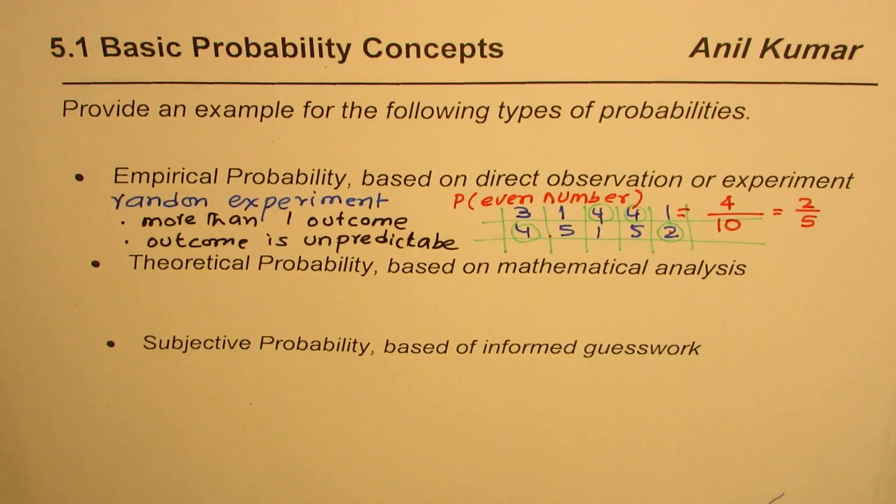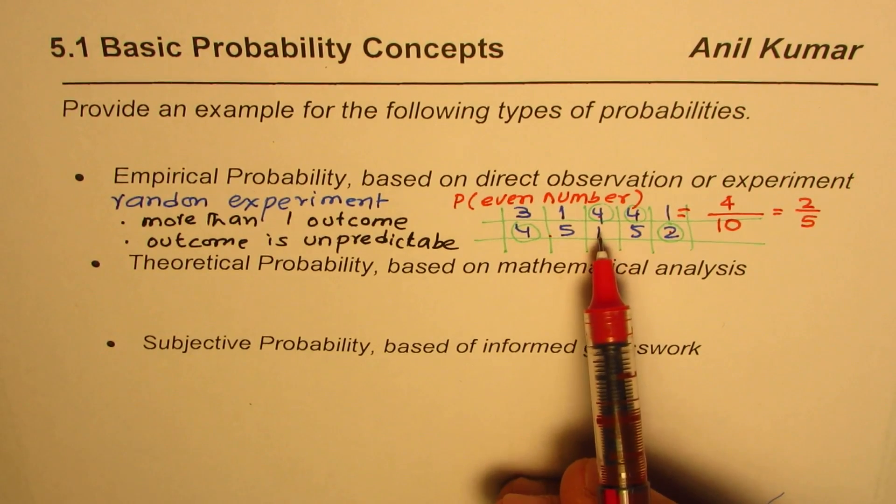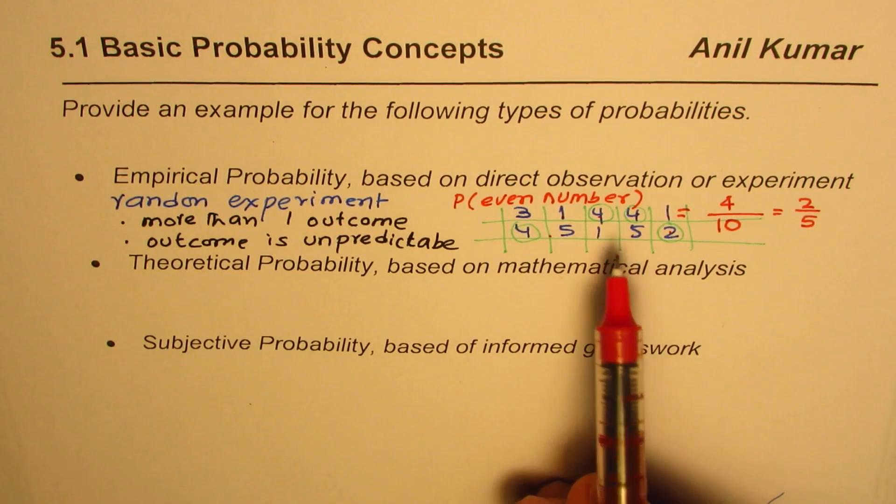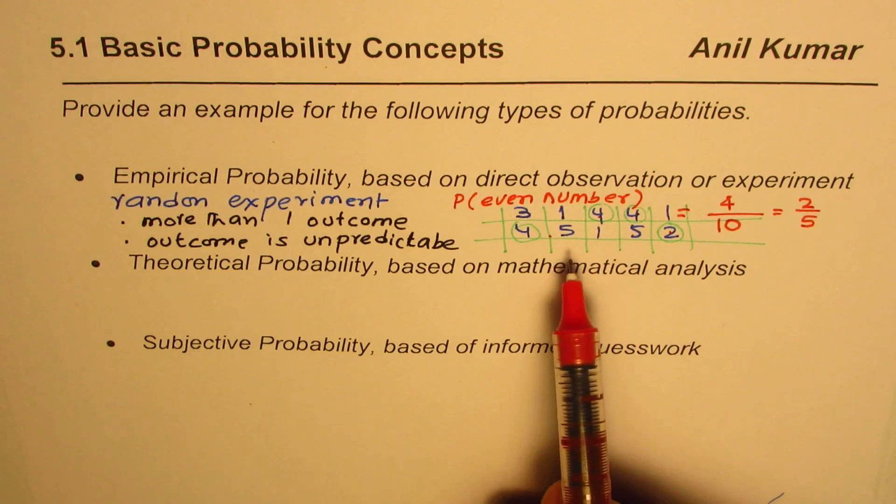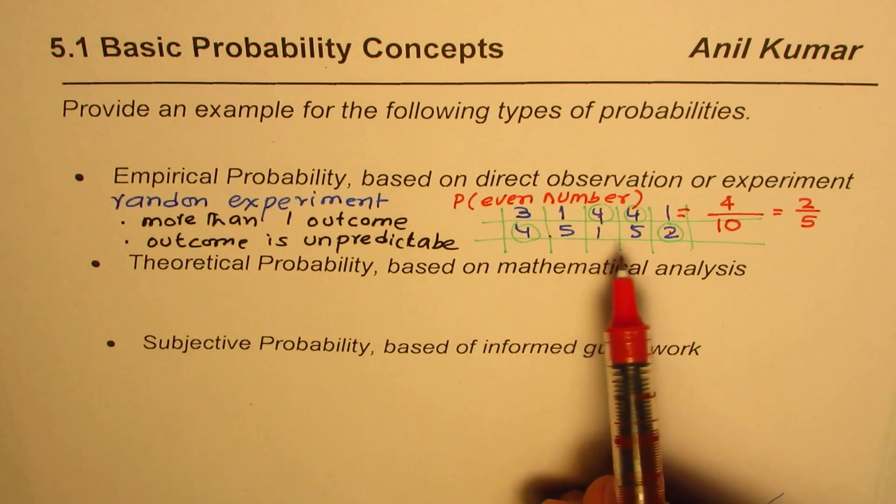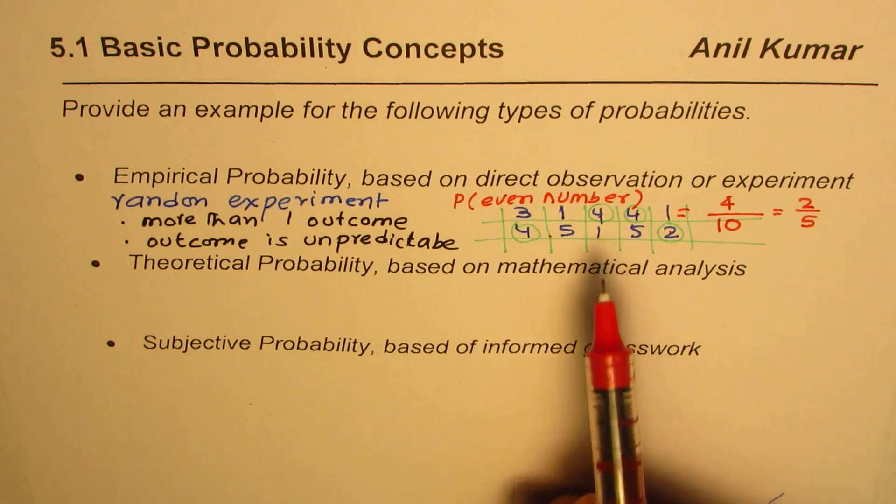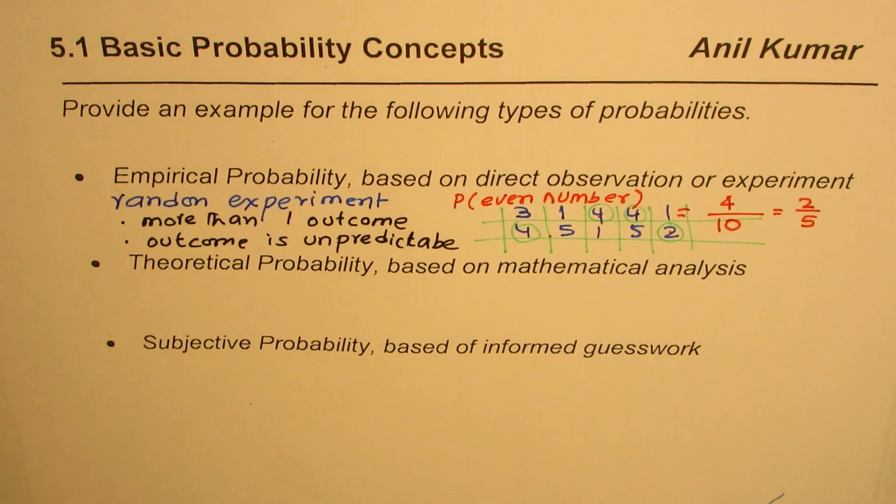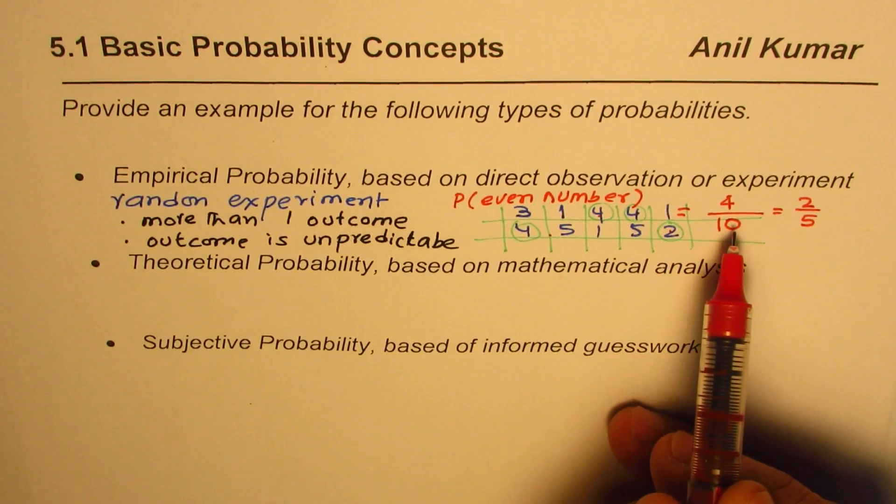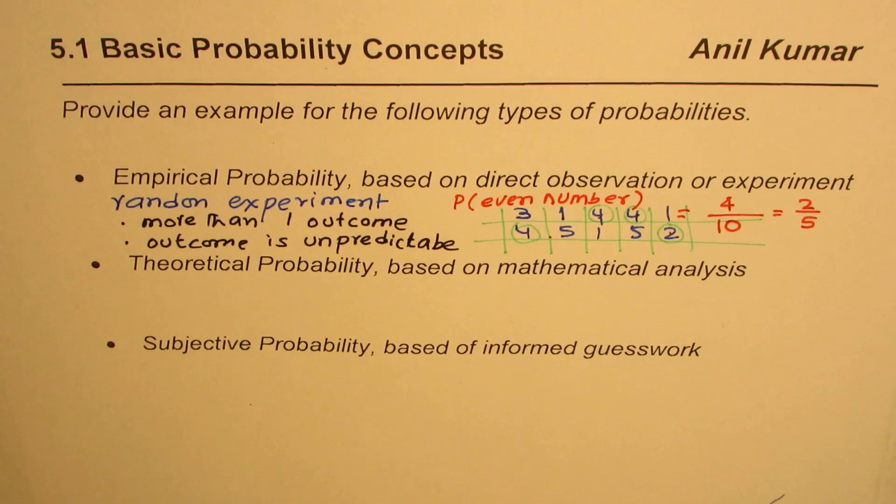Now if we have to do the same experiment and find the probability more accurately, then we actually have to do trials much more than ten. If we do trials let's say hundred or so we will approach the result which we could using theoretical probability.